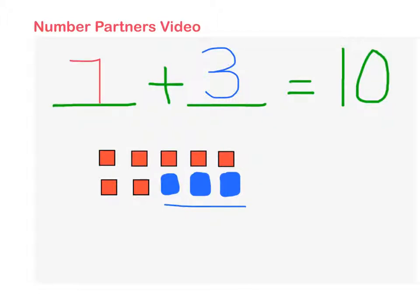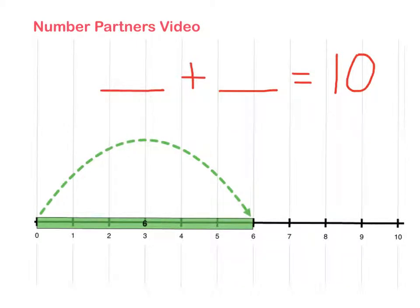Now in the next video, we will solve for two missing partners until we get to a total of ten using—let's see—let's use a number line. See you soon! Well, here we are again, looking to solve for partners of ten.